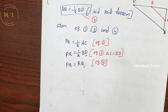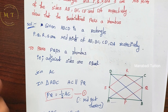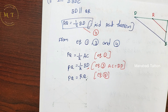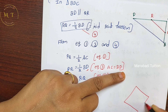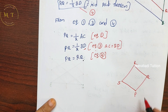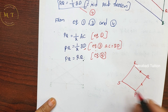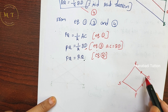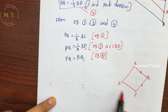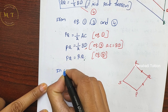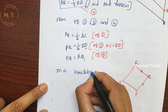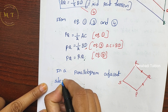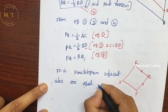So PQ and RQ are two adjacent sides of quadrilateral PQRS, and they are equal. Since all four sides PQ, QR, RS, and SP are equal, and PQRS is a parallelogram, PQRS is a rhombus.